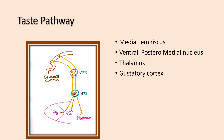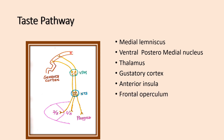The third-order neuron originates from the ventro-postero-medial nucleus of the thalamus and travels through thalamic radiation to the gustatory cortex. The gustatory cortex is mainly located in the anterior insula and frontal operculum.